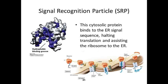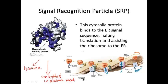Once we establish that interaction, SRP gets recruited to the rough ER where we can finish translation of this protein, which ultimately ends up in one of three places: it can end up in the lysosome, embedded in the plasma membrane, or secreted out of the cell.